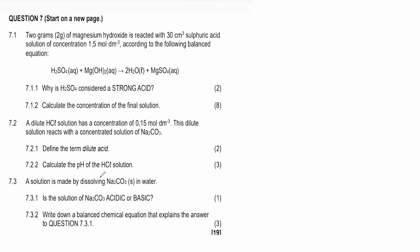Question 7.3.1: a solution is made by dissolving Na₂CO₃ solid in water. Is the solution acidic or basic? Since Na₂CO₃ is a base, according to Arrhenius theory it produces hydroxide ions in water, making the solution basic — alkaline. The answer is: basic.